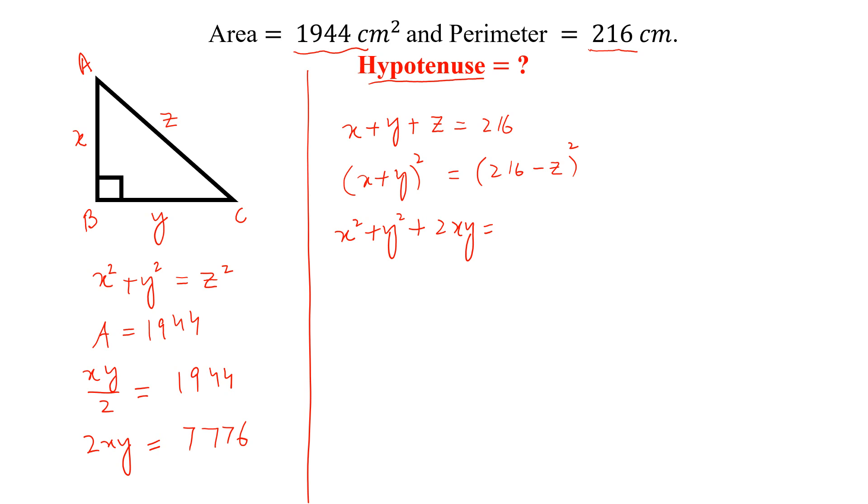So we can write x squared plus y squared plus 2xy is equal to 216 squared. This is equal to 46,656 plus z squared minus 432z.